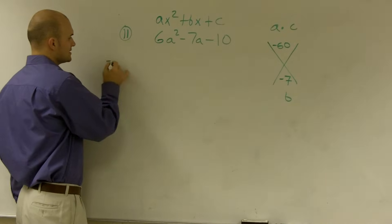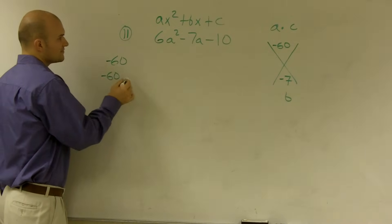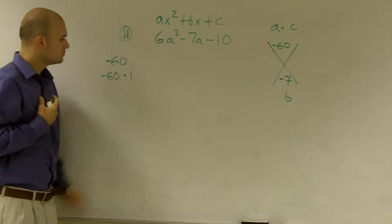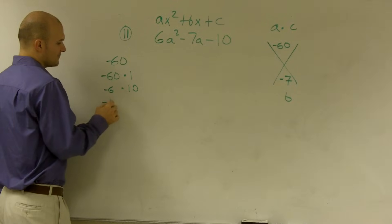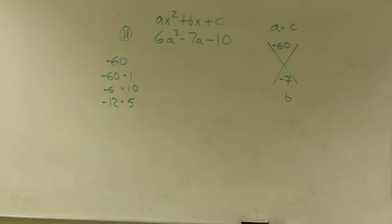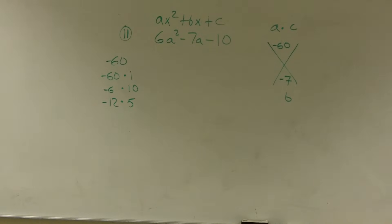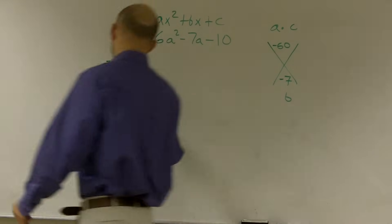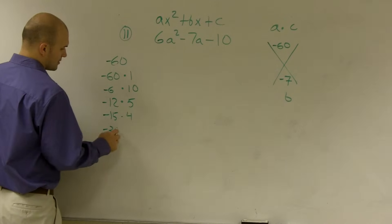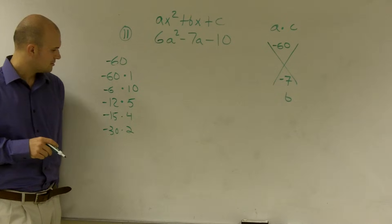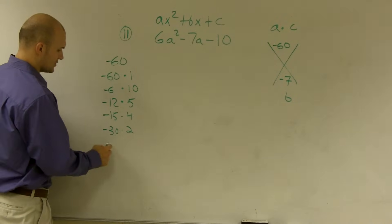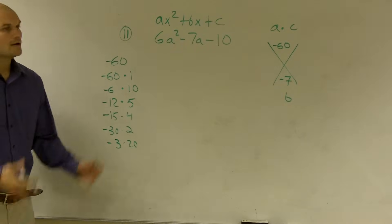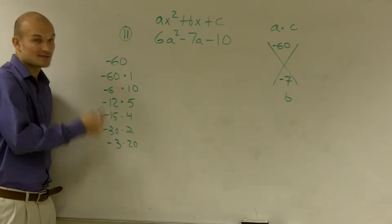So I need to look at this and find what two numbers multiply to give me negative 60 but add to give me negative 7. You can look at all the factors of negative 60: negative 60 and 1, negative 6 and 10, negative 12 and 5, negative 3 and 20. Now you could swap these — these could all be negative and these could be positive, so there are a lot of possibilities.